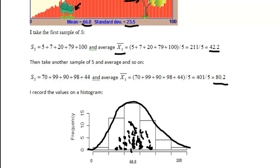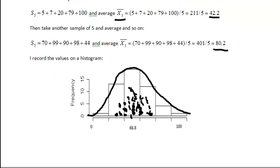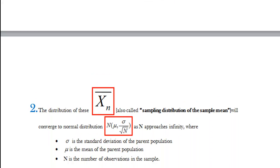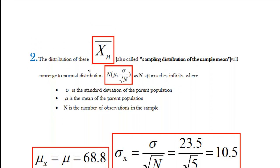Okay, so that leads us to the second part of the central limit theorem. After you've taken these samples, averaged them and reported them on a histogram you then have to observe the following that the distribution of the sample means, the averages of these samples also called sampling distribution of the sample mean, will converge to normal distribution with mean mu